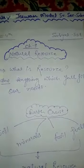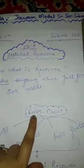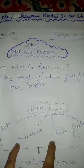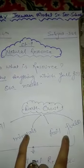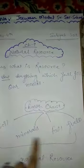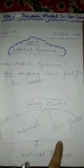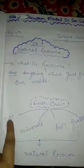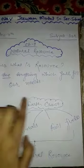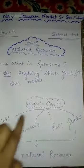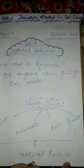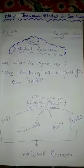As you know, the earth's crust contains soil, minerals, and fossil fuels. All these things are collectively called natural resources — soil, minerals, and fossil fuels combined are called natural resources.